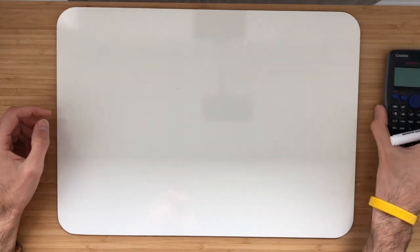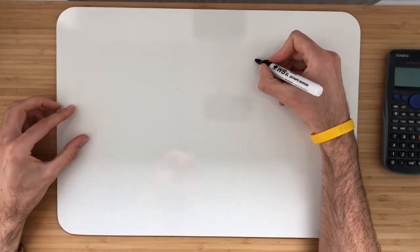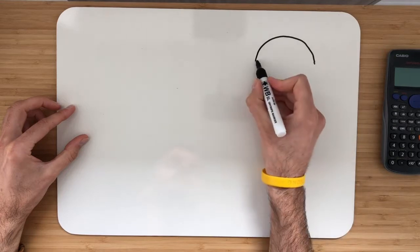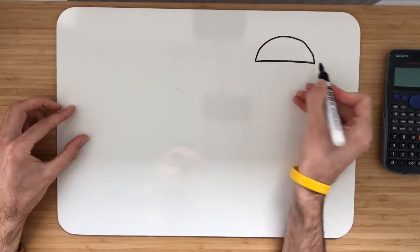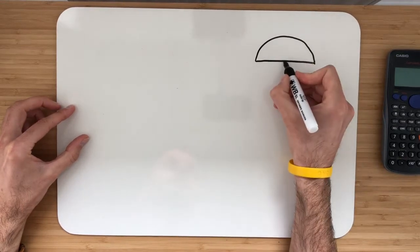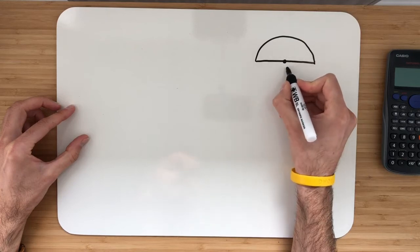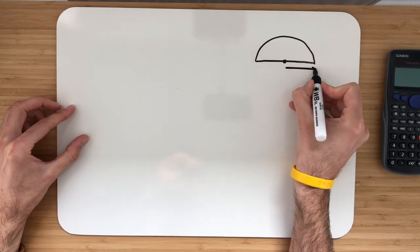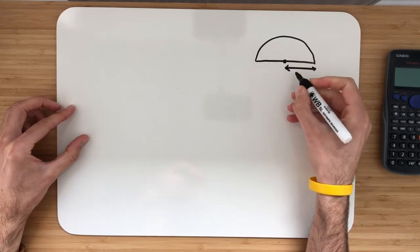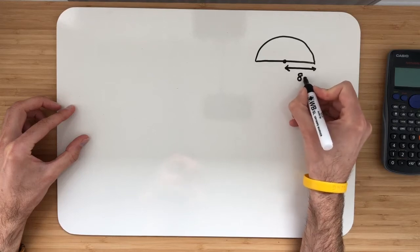So best thing to do first of all is let's just do a very rough sketch. Albeit it's not going to be a brilliant drawing but let's just go for that. So we've got a semicircle. Let's mark in at our centre point. And we know that the radius which goes from centre to edge is 8 centimetres.